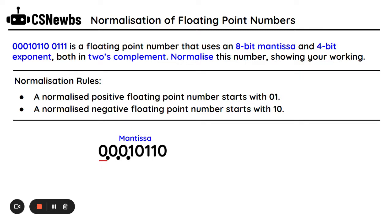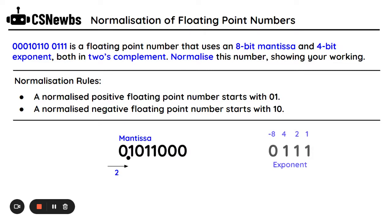I move it one space, two spaces, and it's now in the correct position. I've had to move it twice. I can remove the decimal points and the leading zeros, and now I have my mantissa almost ready. But I've had to remove two values, and it clearly says in the question that it is an 8-bit mantissa. Because I've had to remove two values, I have to add two values onto the right-hand side, and they will always be 0, regardless of if it's a positive or a negative number.